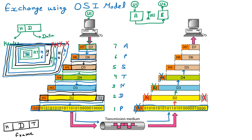Continuing the decapsulation: H5 is discarded by the session layer, then H6 by the presentation layer, and finally H7 by the application layer. With all layers removed, only the original data remains — the data which was sent initially. This data is now received by User 2, who reads it. This is easy to understand with the OSI model exchange process.